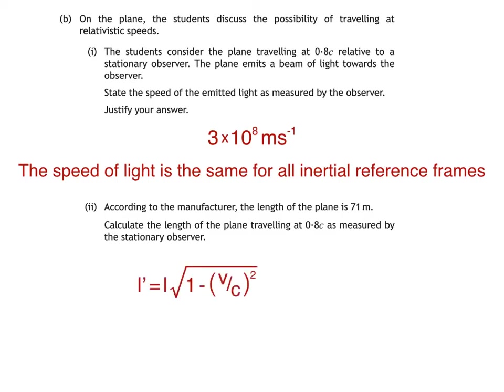L' is the contracted length measured by an observer in a different inertial reference frame than the object being measured. L is the proper length measured by an observer in the same inertial reference frame as the object — in other words, someone on the plane. V is the speed of the plane, and c is the speed of light. In some questions we might be given the actual speed in metres per second, but since we're given a fraction of the speed of light, we can substitute v/c directly into the equation.